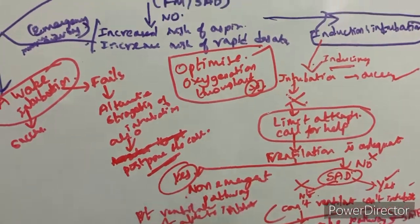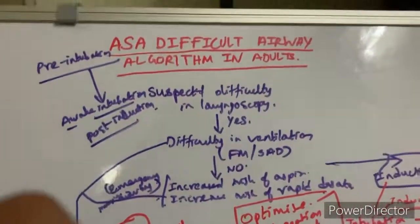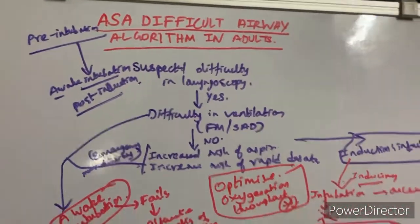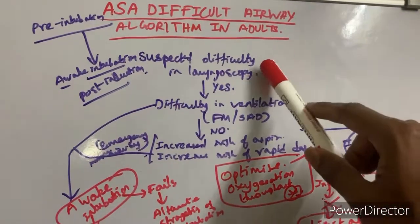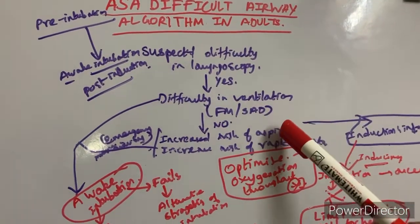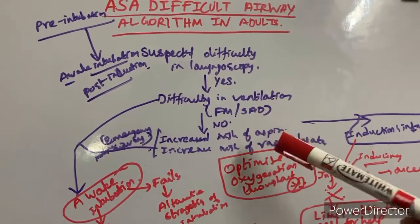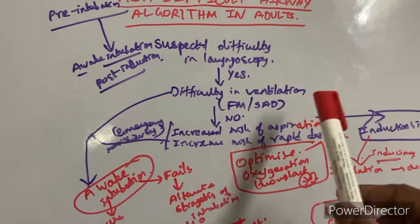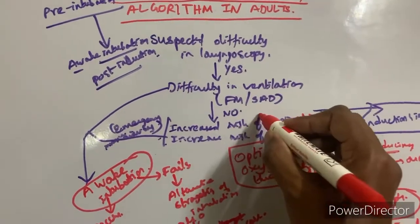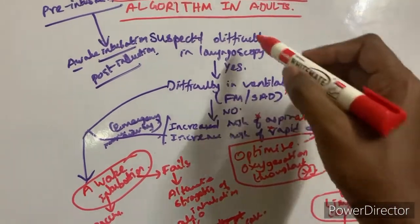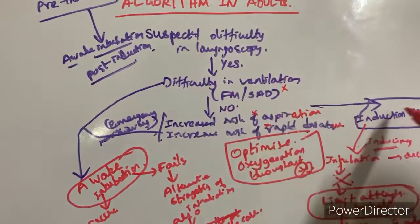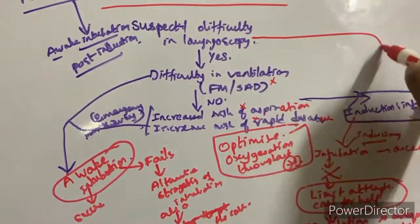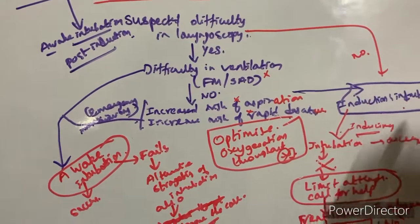Summary of the ASA difficult airway algorithm: Pre-intubation, decide whether awake intubation or post-induction intubation is the strategy. When there is suspected difficult laryngoscopy, assess difficulty in ventilation with face mask or SAD, increased risk of aspiration, and increased risk of rapid desaturation. If all these are negative — only difficulty in laryngoscopy — proceed with induction and intubation strategy.